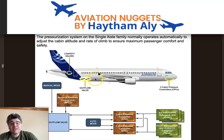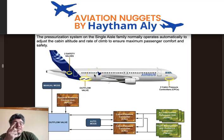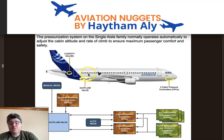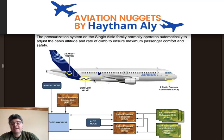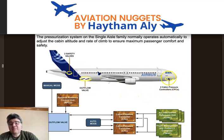Because the outflow valve is so important, it must have many ways of being controlled and operated. This outflow valve operates by three motors: two automatic motors and one manual motor. For the automatic mode, system one is CPC1 with motor one, and system two is CPC2 — cabin pressure controller two — with motor two.